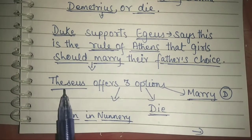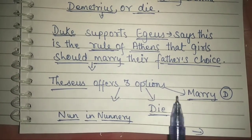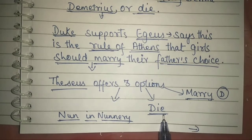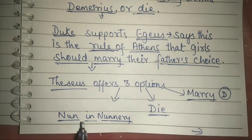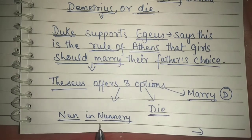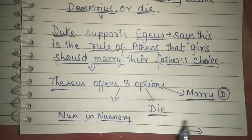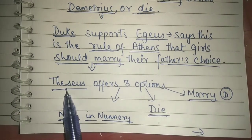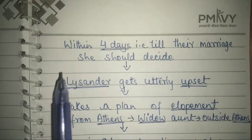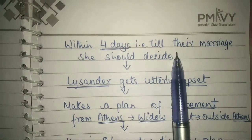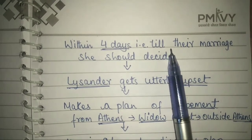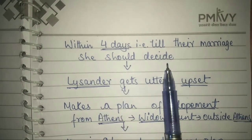Four options were given by the Duke: either Hermia gets married to Demetrius, she must die, or she should become a nun in a nunnery. These three options were given by the Duke, and he says that within four days — that is, till the marriage of Hippolyta and Theseus — she should decide.